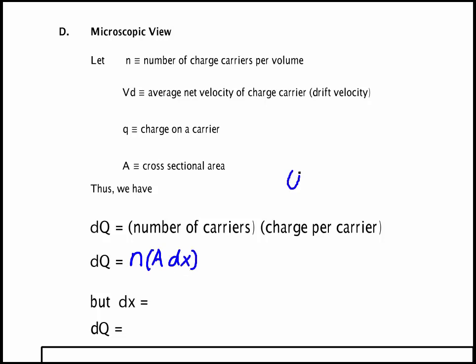So you can think of this for instance if we think of a cylinder. The volume here, this is dx, and this area is A, and then dV the volume is A dx. So I multiplied the volume times the carriers per volume to get the number of carriers. Then I multiply that by the charge per carrier, which is q.